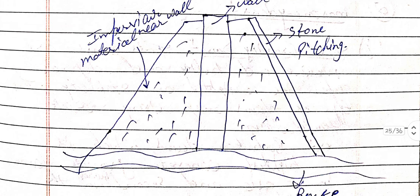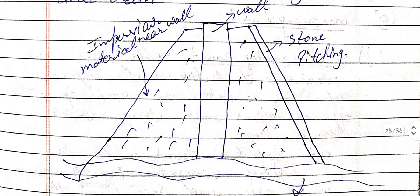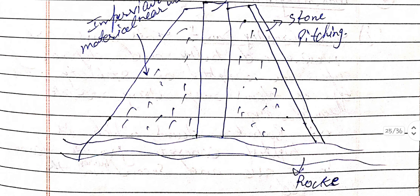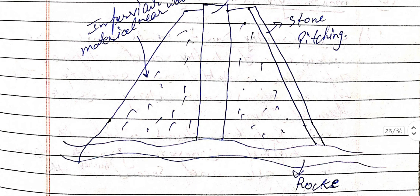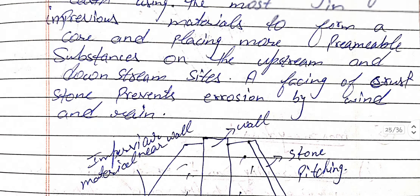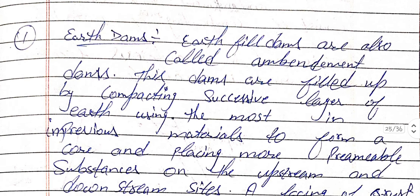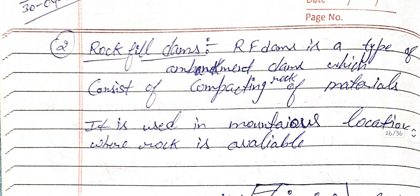This is the diagram for the earth dam. In the diagram you can see there is a wall in the middle, stone pitching on the sides, impervious material near the wall and at the bottom, and rocks on the outer sides.